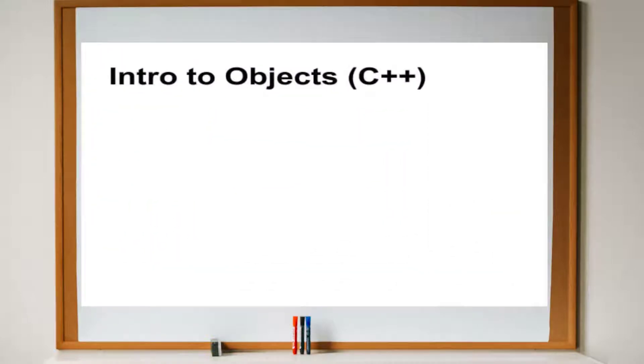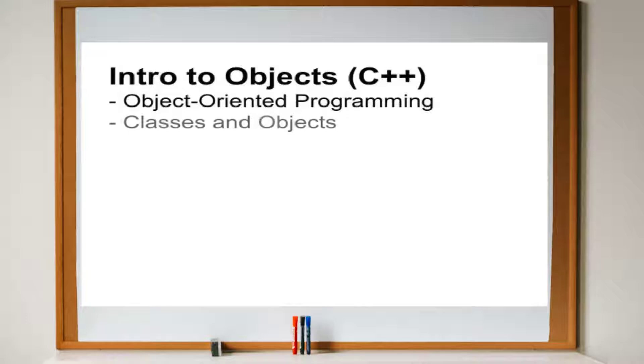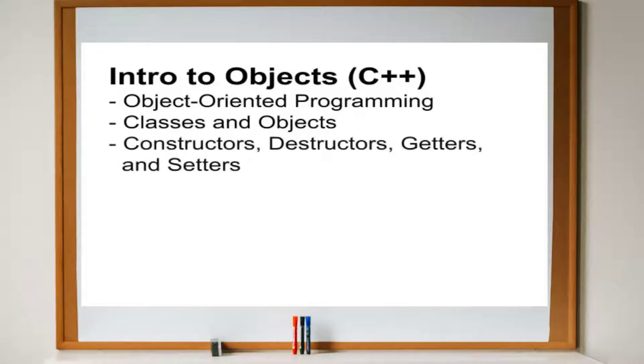In this tutorial, we will be taking an introductory look at object oriented programming in C++. Here we will look at classes and objects and their various components. You will look at the basic types of class operations such as constructors, destructors, setters, and getters. Finally, you will look at the keywords private, public, and protected.